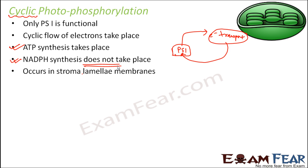Cyclic photophosphorylation occurs in the stroma lamellae membranes. Non-cyclic photophosphorylation occurs in the thylakoid membranes, whereas cyclic photophosphorylation occurs in the membranes of the stroma lamellae — the connecting joints between thylakoid stacks. In the membranes of stroma lamellae, PS2 is not present; only PS1 is present.